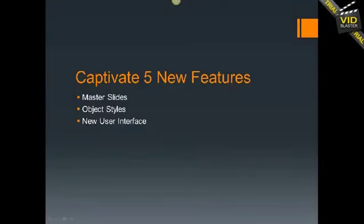Third is a brand new Captivate user interface. The new interface is very efficient and easier to work with. You don't have to have pop-up windows with tabs going back and forth anymore — everything is right in front of you. The properties inspector on the right-hand side of the screen, or wherever you want to move it, is very easy to work with. You also have the ability to create a lot of layouts and put things exactly the way you want them.